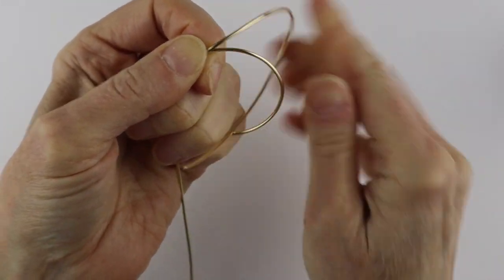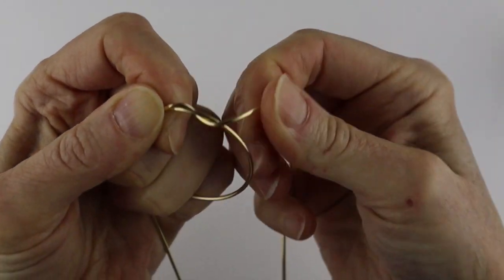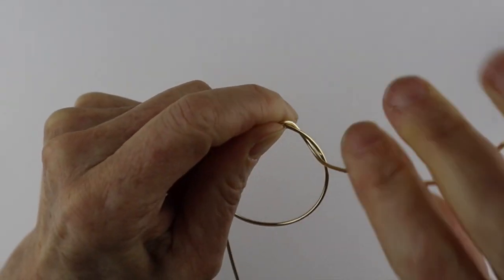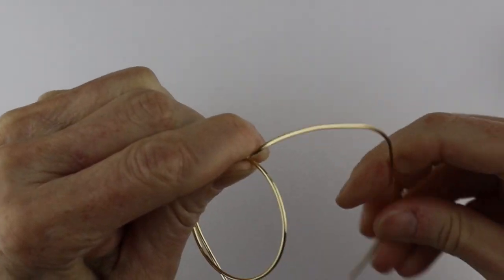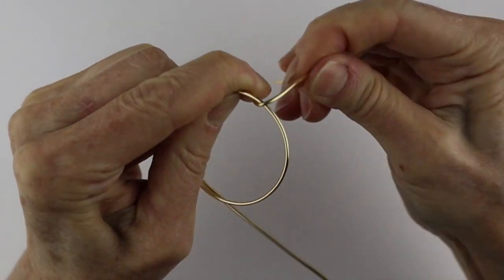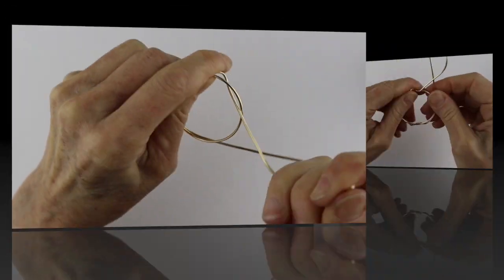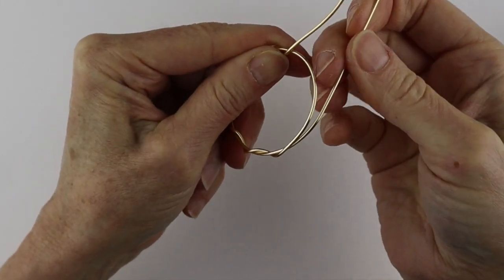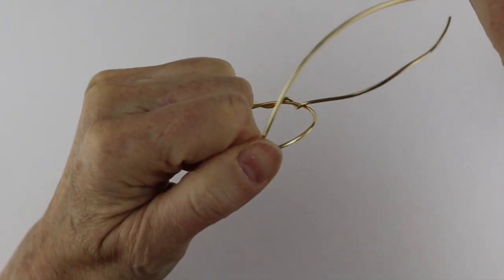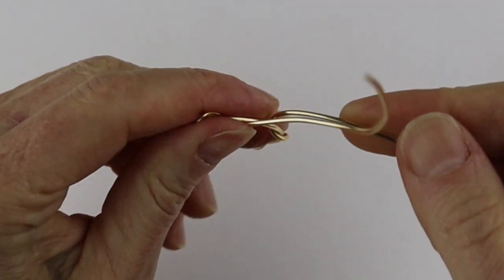All you need to do is take the end and wind it around. This will give it a nice little texture and also secure the ring in place. Just go around, around, around. It makes a nice little wave around the outside. On the other side you can also do the same and work your way around this way.